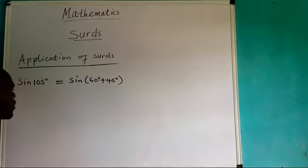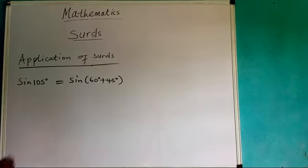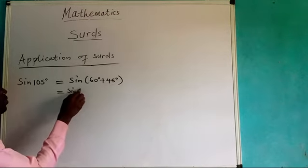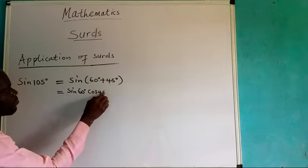When you add up these two angles together, you have 105. Just use the calculator and do that. 60 plus 45, you have 105. We can apply an identity here. It simply means sine of 60 degrees plus 45 degrees.